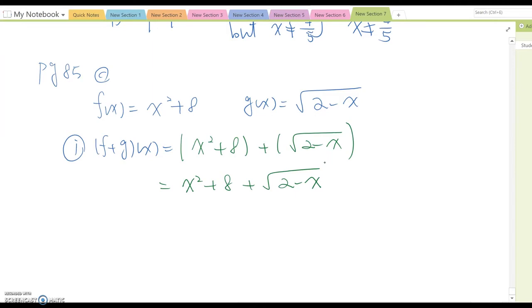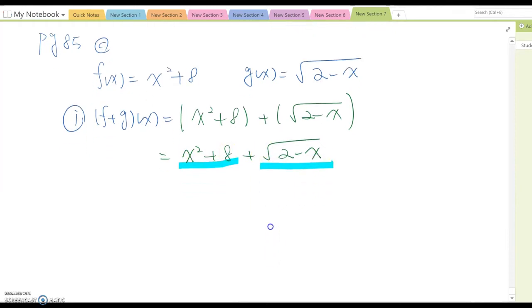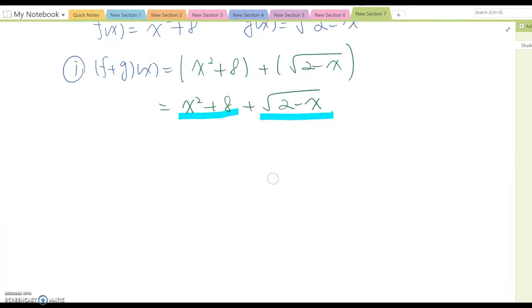Now, because this is the rational form and that's the irrational form, we cannot combine. So we leave it like that. However, the domain affects it. Because in the domain case, both functions must be satisfied.